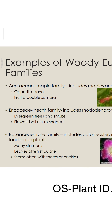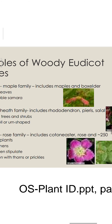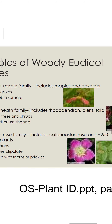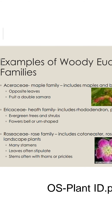Ericaceae, the heath family, includes rhododendron, pieris, salal, and evergreen trees and shrubs. Their flowers are bell or urn shaped.